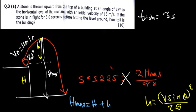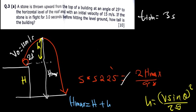An important note: under projectile motion, G is always plugged in as positive, because when deriving the formulas we already included the negative sign. So the negative is already built into the equations — you always use G as positive. This is the most important thing to remember under projectile motion.